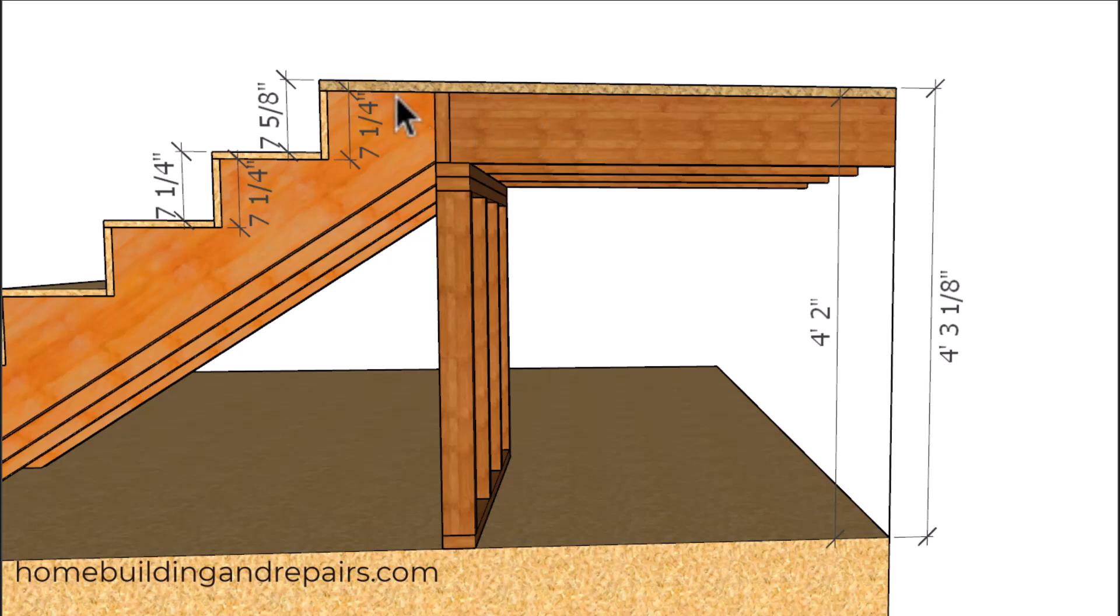height of the landing and the top of the stringer, then I'm going to end up with a taller riser here. So let's take a look at these numbers over here. Four foot two, four foot three and an eighth. This is the measurement from the top of the floor to the top of the floor, and this is a measurement to the top of the joist.